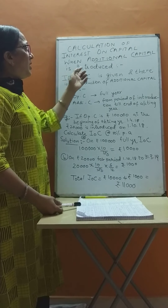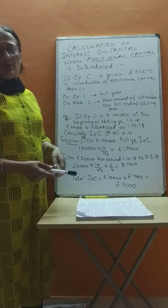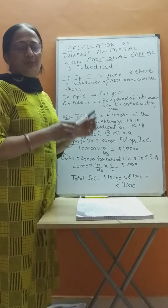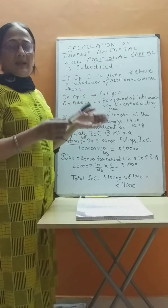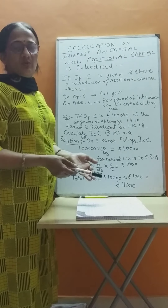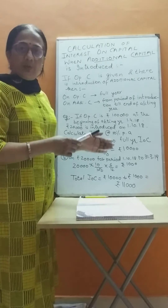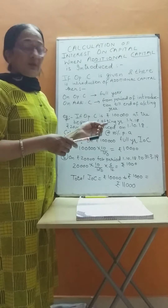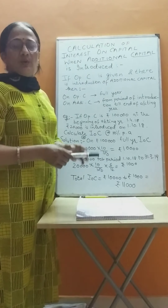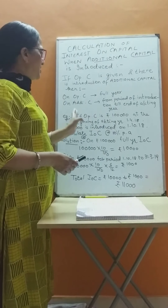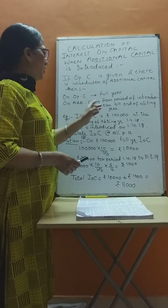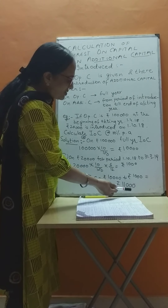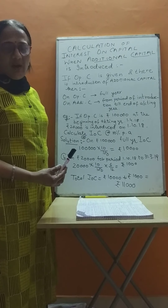To recall: when additional capital is introduced, first find the interest on opening capital for the full year. Then for the additional amount introduced during the accounting period, calculate interest on capital for that period only. Finally, add the full year interest on opening capital and the interest on additional capital — as we did here: ₹10,000 + ₹1,000 = ₹11,000. I hope you have understood.